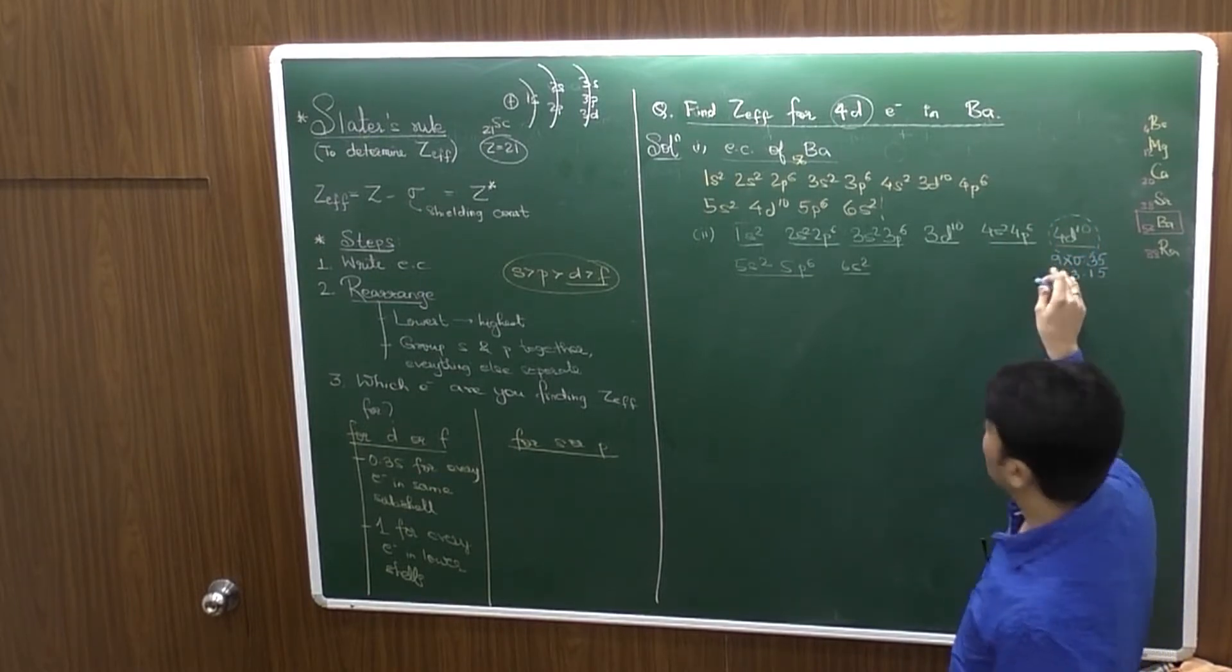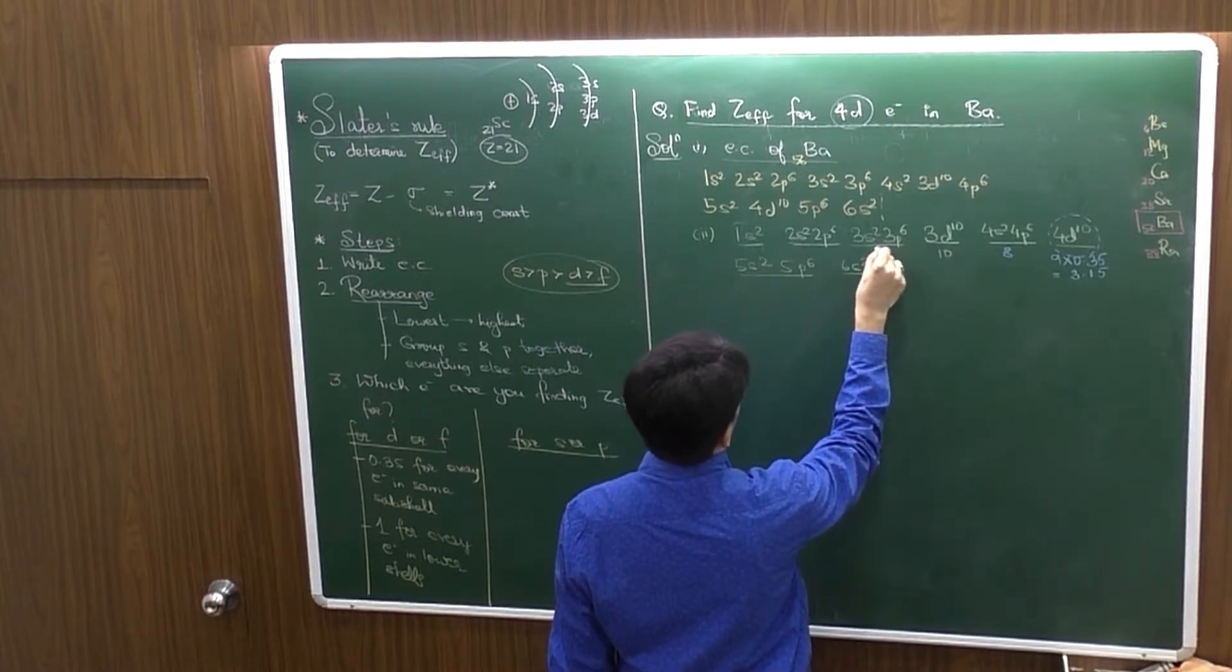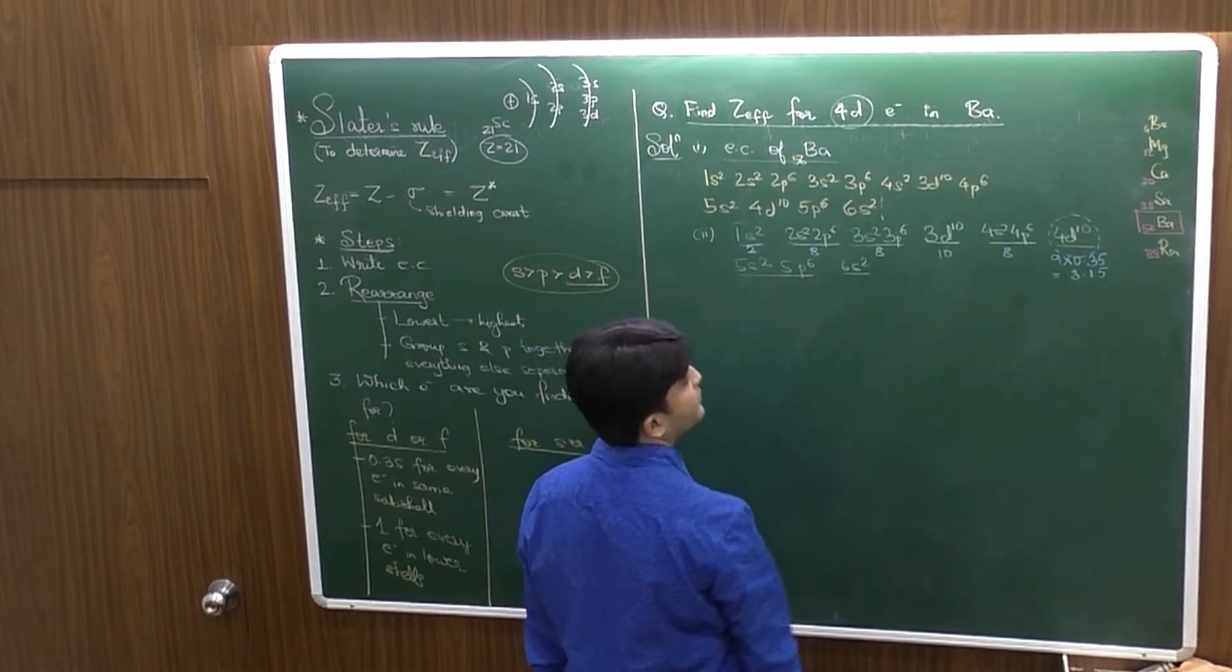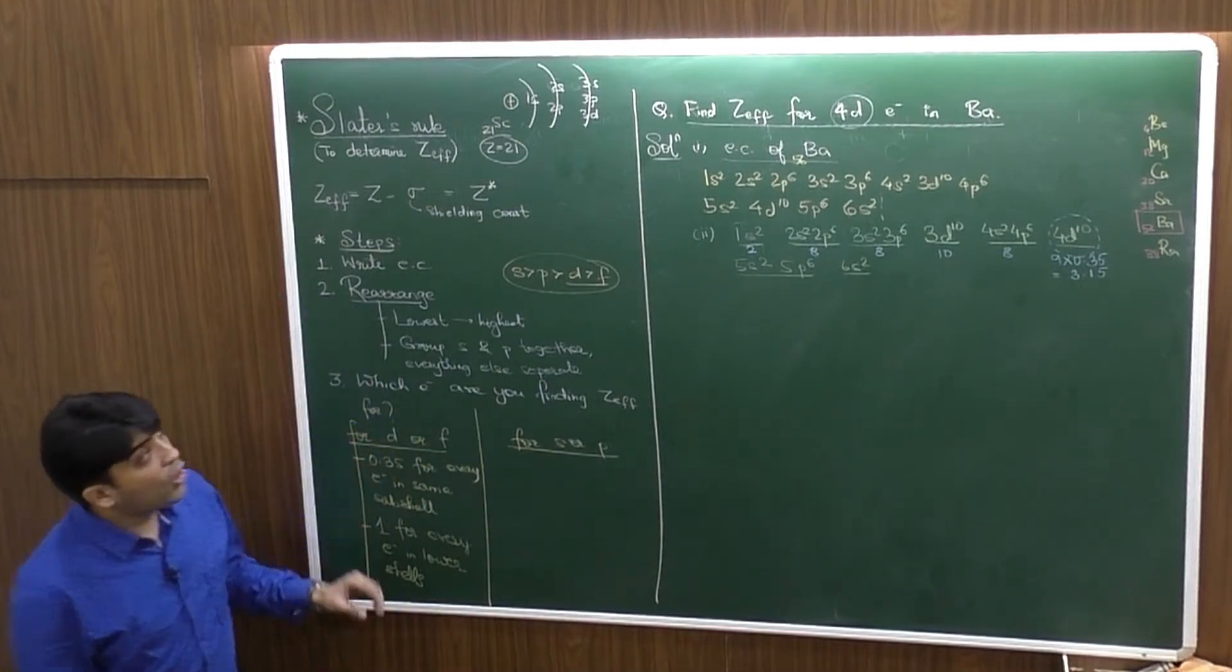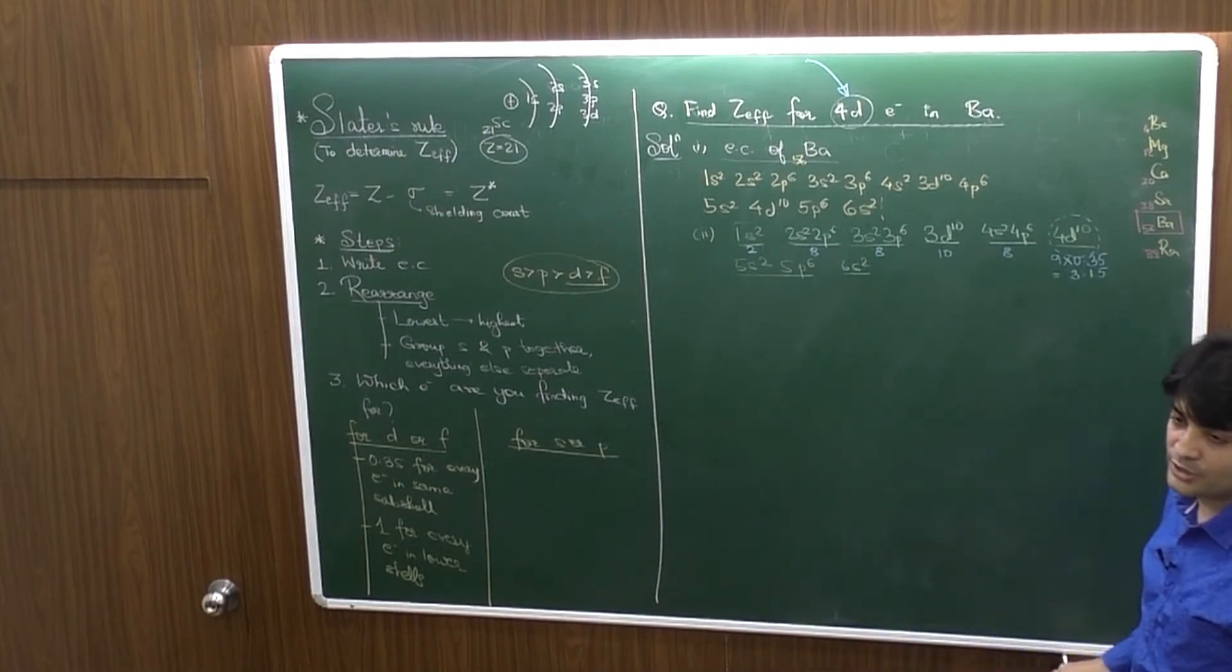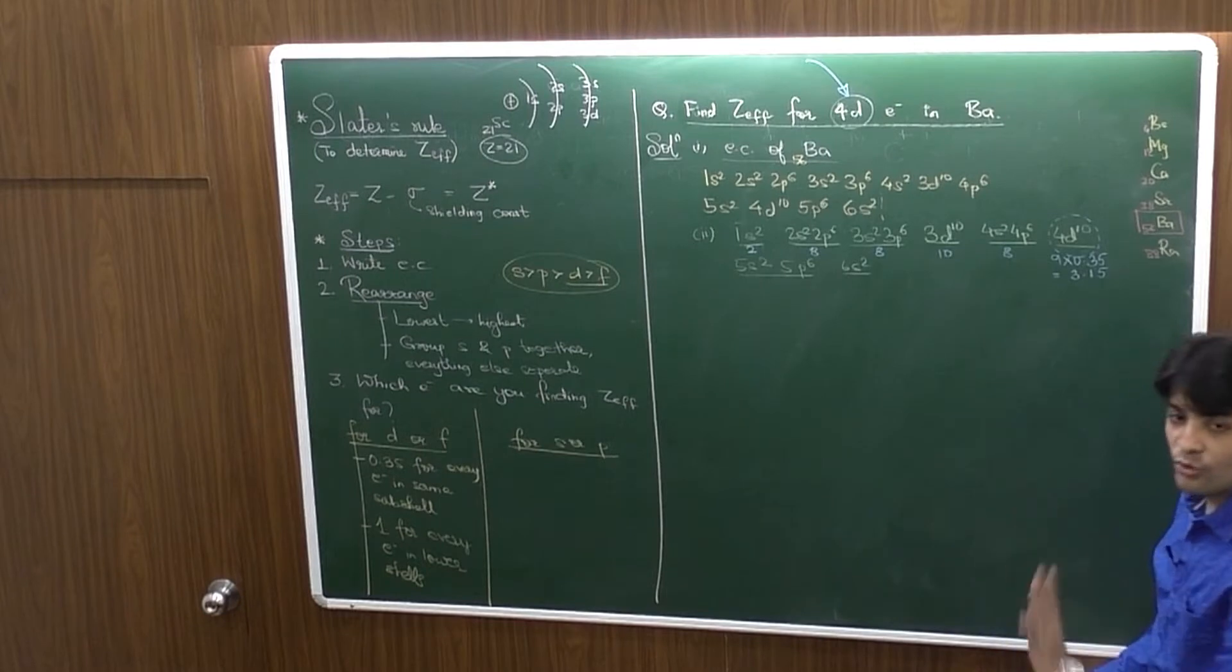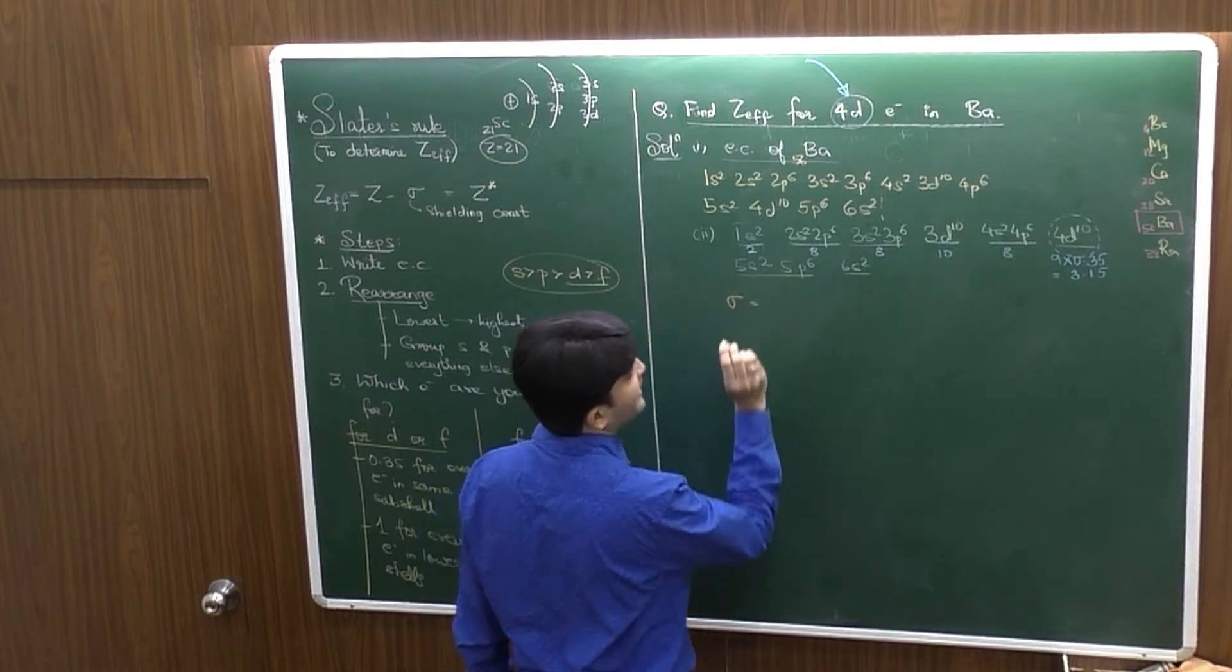Then, 1 for every electron in the lower shells. So, lower shells, when you have D. Same sub shell, D. Then what will we do? 8 into 1, 10, 8, 8 and 2.